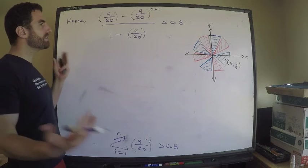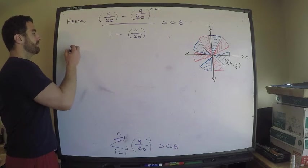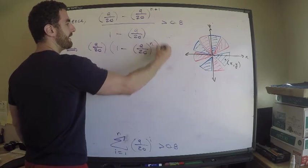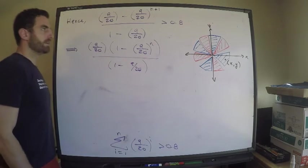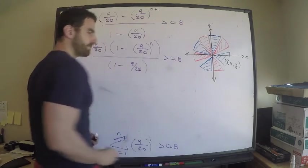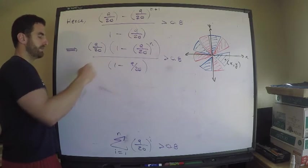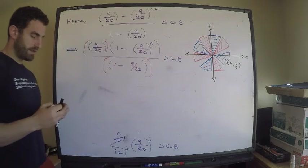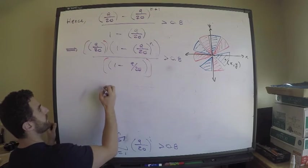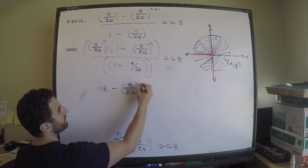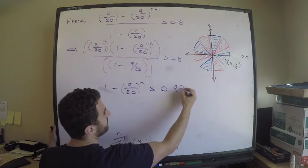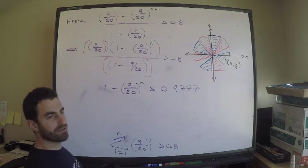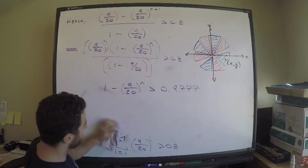I just need to solve for n here. It's pretty much just algebra now. I factor this out: 9 over 20 times (1 minus 9 over 20 to the n) divided by (1 minus 9 over 20) is greater than 0.8. Now multiply both sides by the reciprocal of this. I'm going to get 1 minus 9 over 20 to the n is greater than 0.9777...